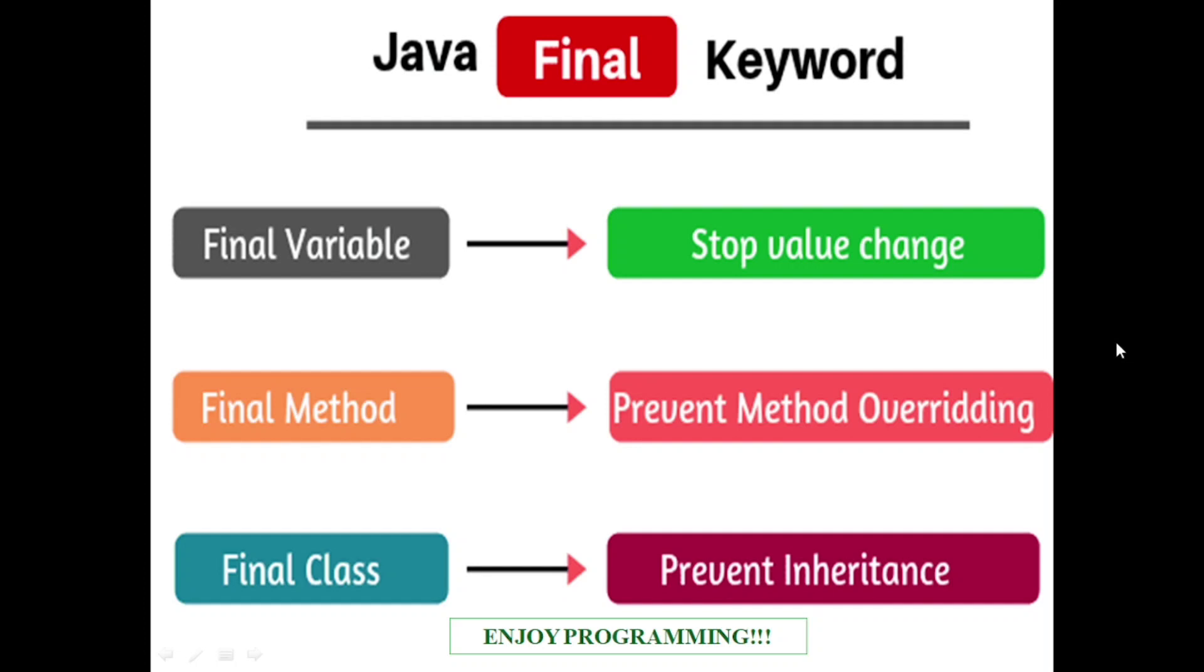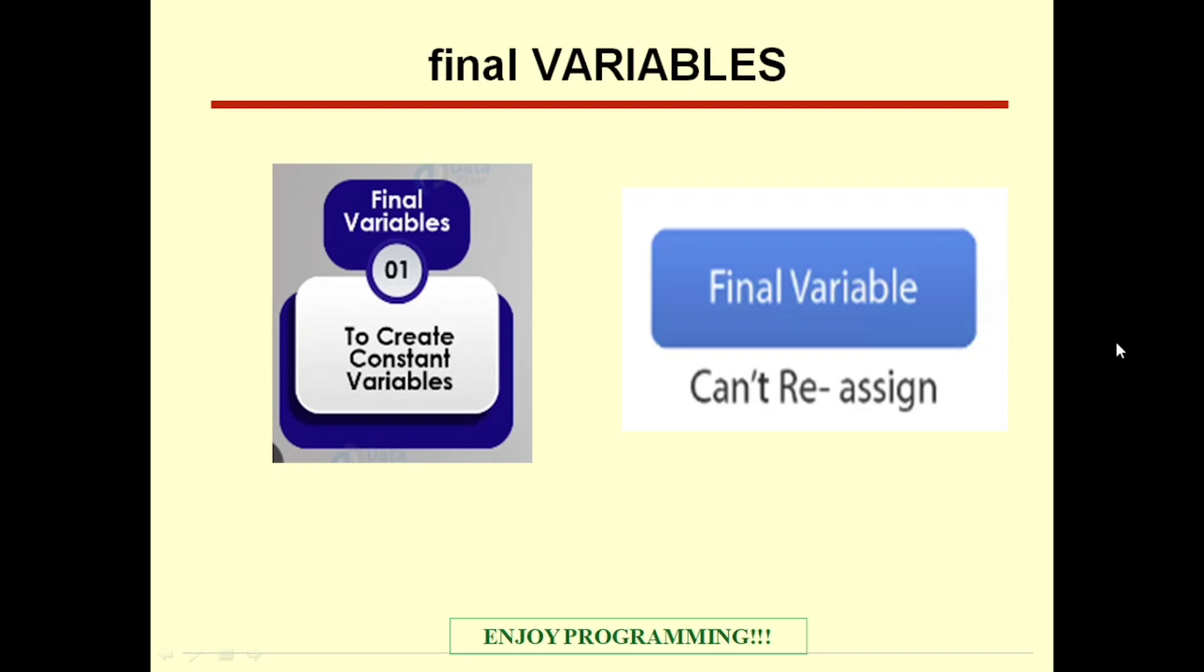If we make a class as a final class, then we cannot perform inheritance. That means it prevents inheritance. That final class cannot be extended further. So in this video, we are going to discuss about final variables.